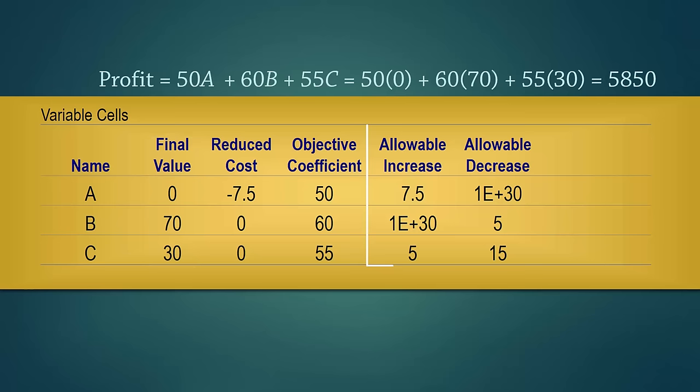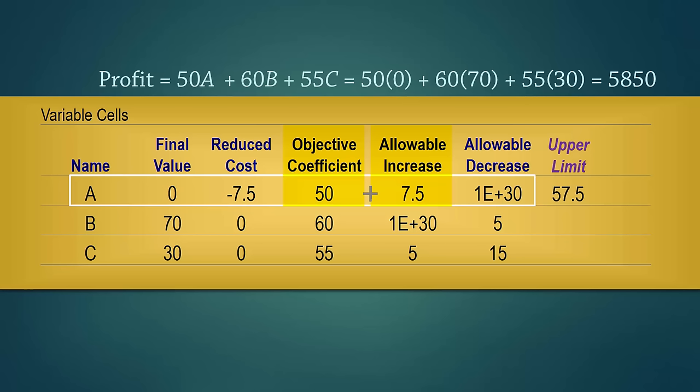Now, these allowable increase and decrease values specify how much the objective coefficients can change before the optimal solution will change. For example, since the allowable increase for A is 7.5, if we increase the objective coefficient of A from 50 to any value up to an upper limit of 57.5, the optimal solution will not change. For the allowable decrease, Excel usually represents very large values with 1E plus 30. So you can think of it as infinity. Thus the lower limit for the coefficient of A is negative infinity.